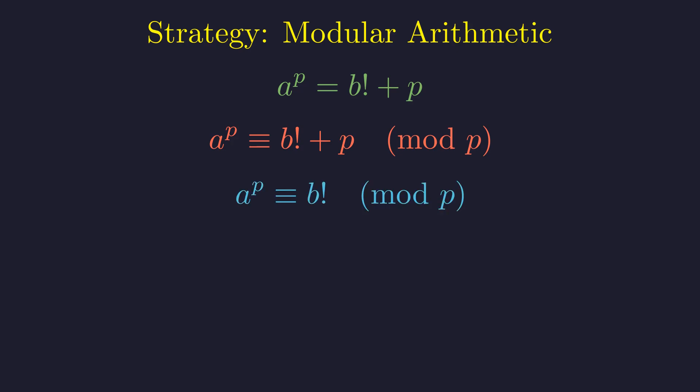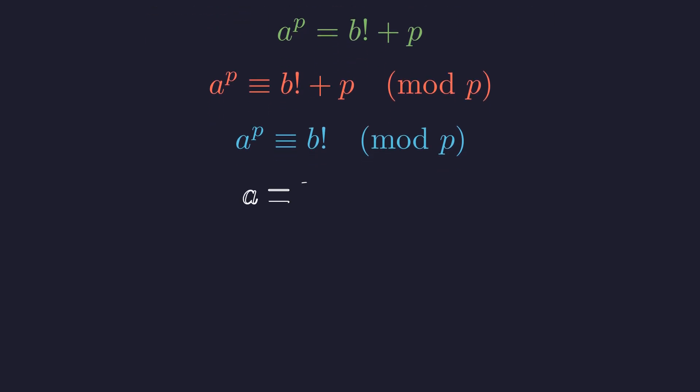The term A to the power of P should immediately bring to mind a famous result from number theory: Fermat's Little Theorem. We apply this powerful tool, which states that for any prime P and any integer A, A to the power P is congruent to A modulo P. This holds true even if A is a multiple of P. Applying this gives us an elegant relationship.